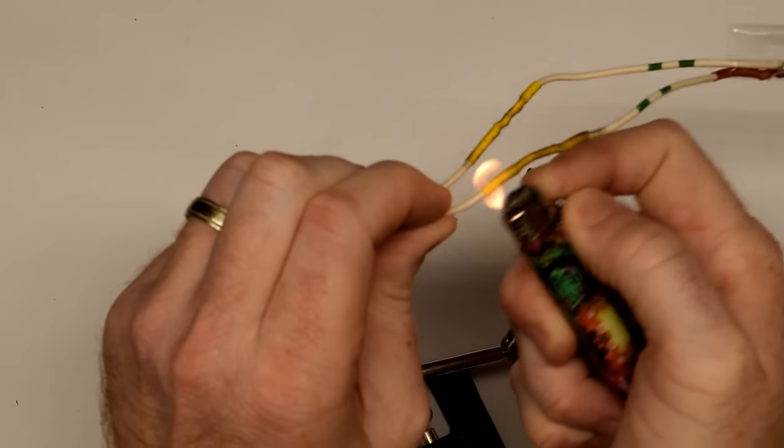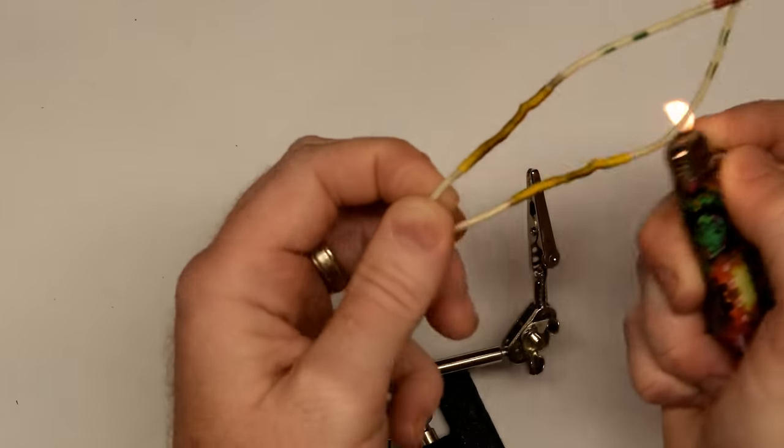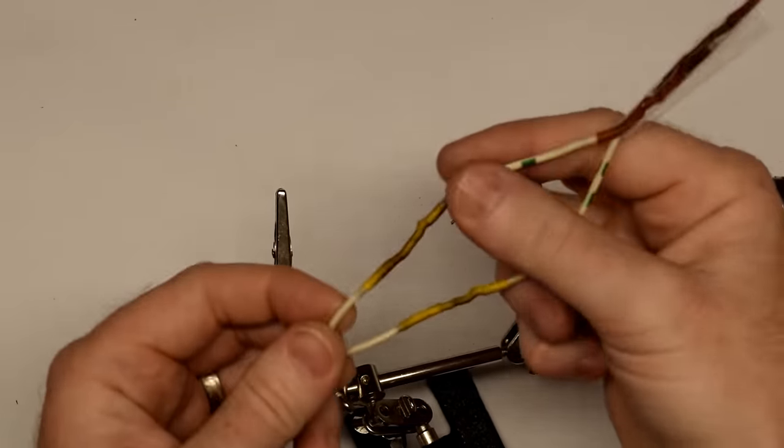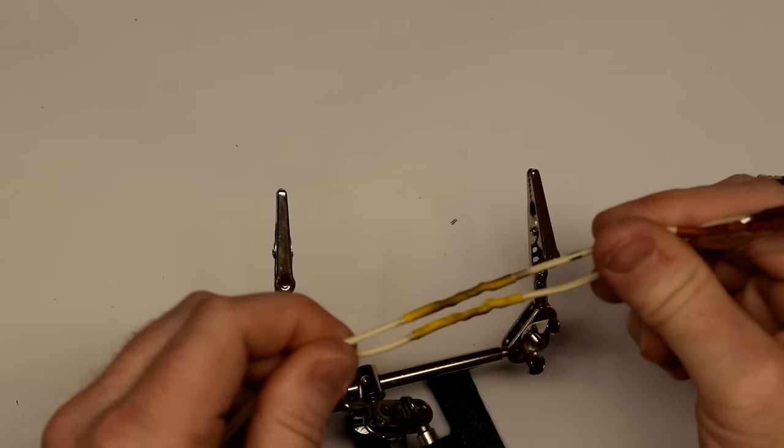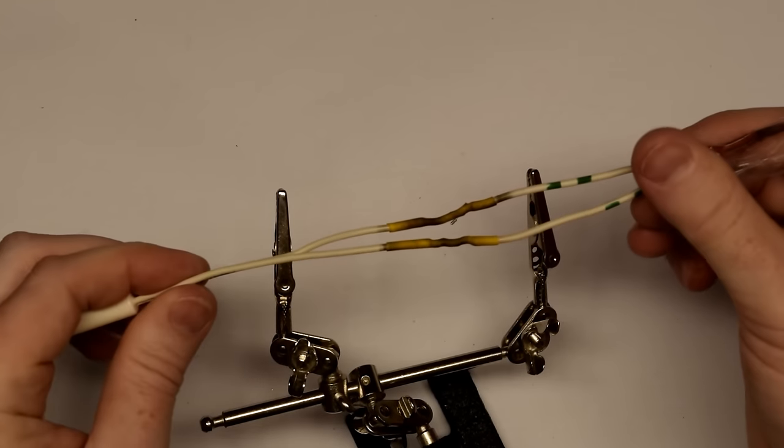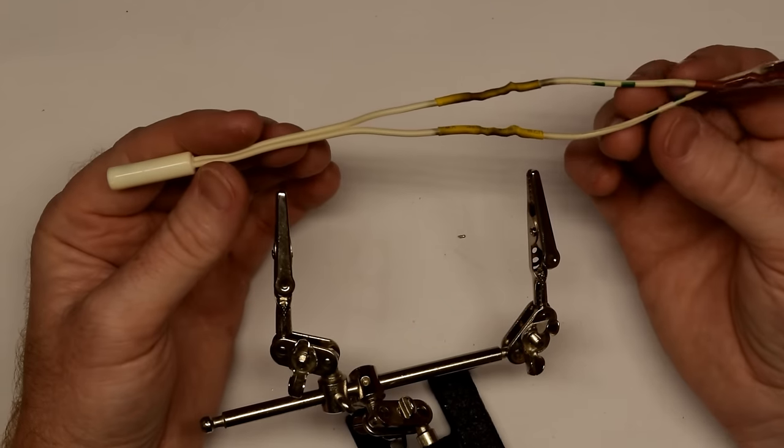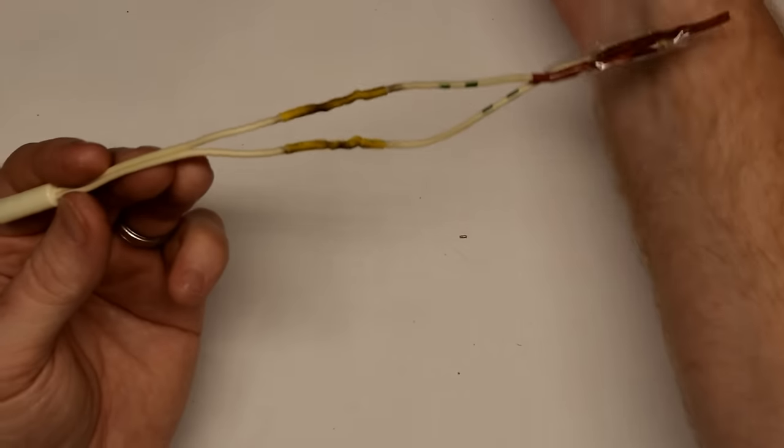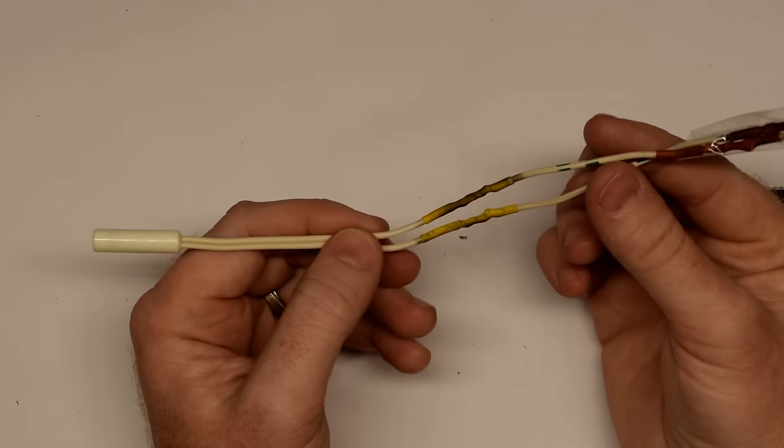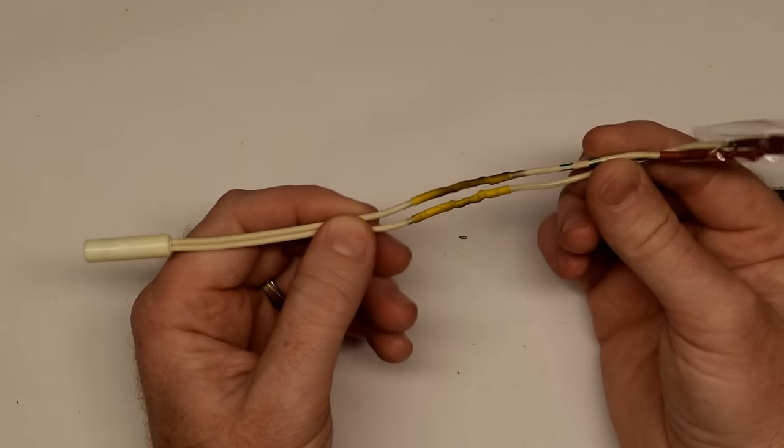This shrink tubing shrinks up to about a third of its original size. So basically shrinks up around the original wire, keeps your solder joints protected from the elements. So that's the correct way to install one of these thermistors. Again, you won't have to do it twice. It's there for good.